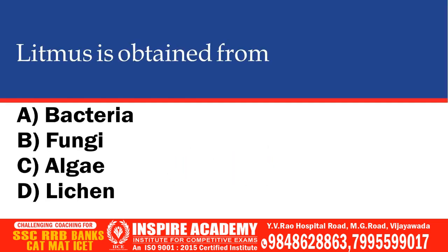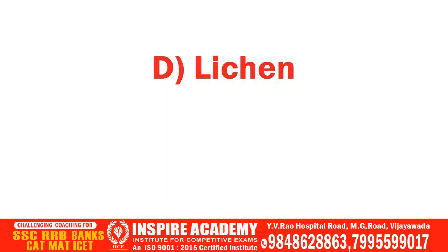Litmus is obtained from which of the following? Options: Bacteria, Fungi, Algae, Lichen. The correct option is Lichen.